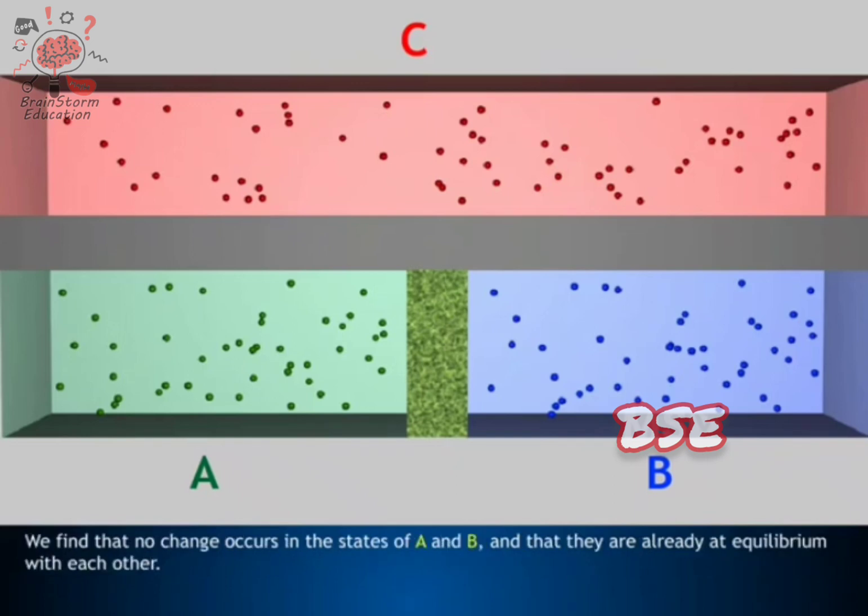We find that no change occurs in the states of A and B and that they are already at equilibrium with each other. This observation leads us to the 0th Law of Thermodynamics.